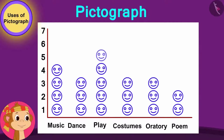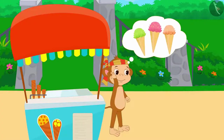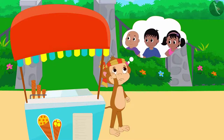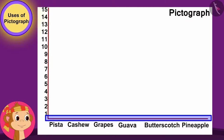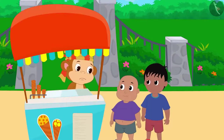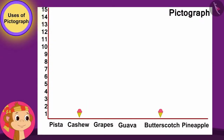Babban is now very happy to have learned about the pictograph. He wants to sell new ice creams in his ice cream stall, but he is unable to decide which new ice cream will sell more. He thought, why not ask his customers to find out which ice cream they would like more. The next day, Babban made a pictograph. On the lower line, he wrote the names of different types of ice creams.